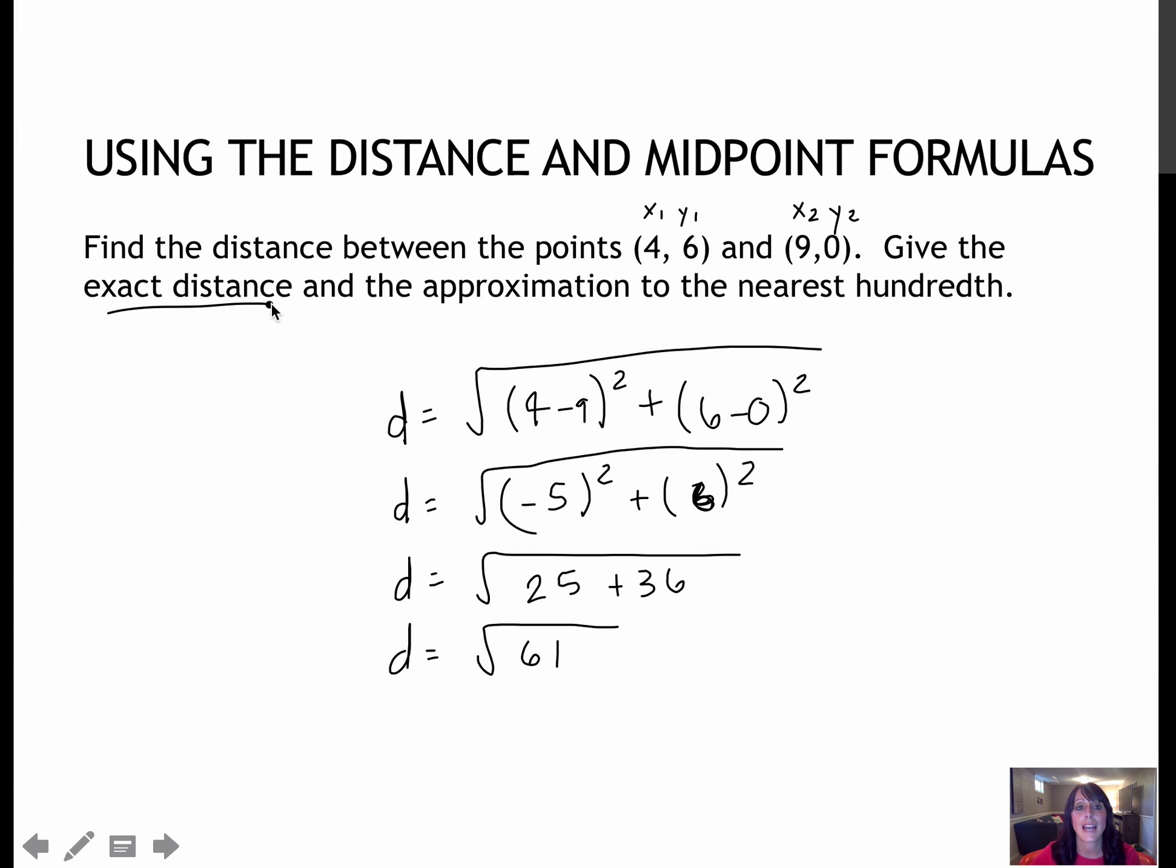So 25 plus 36 is 61. The exact distance would be radical 61, and we'll just call it units. If I were able to reduce that radical by taking out a perfect square factor like we worked on last week, I would do that. In this case, I cannot. They also want me to approximate that to the nearest hundredth. In my calculator, I'm going to take the square root of 61. The distance approximately equals 7.81 units. If I wanted to graph that on a coordinate plane, I could see that's about how many units it covered.